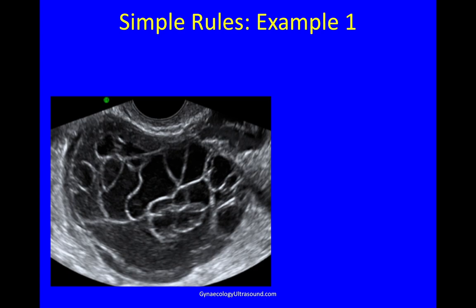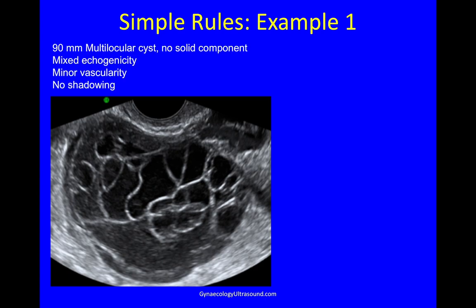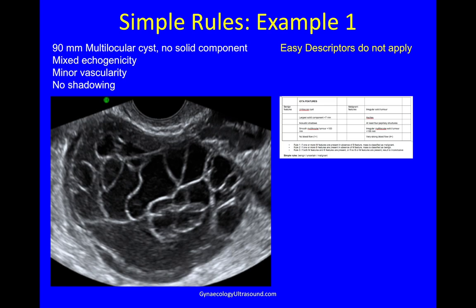Some examples of simple rules. Here we have a 9 cm multilocular cyst with no solid component, some mixed echogenicity in the locules, minor vascularity, and no shadowing. Easy descriptors do not apply. On simple rules: it's a smooth multilocular cyst of less than 10 cm and there are no malignant features, so simple rules says it's benign. This was a mucinous cyst adenoma.